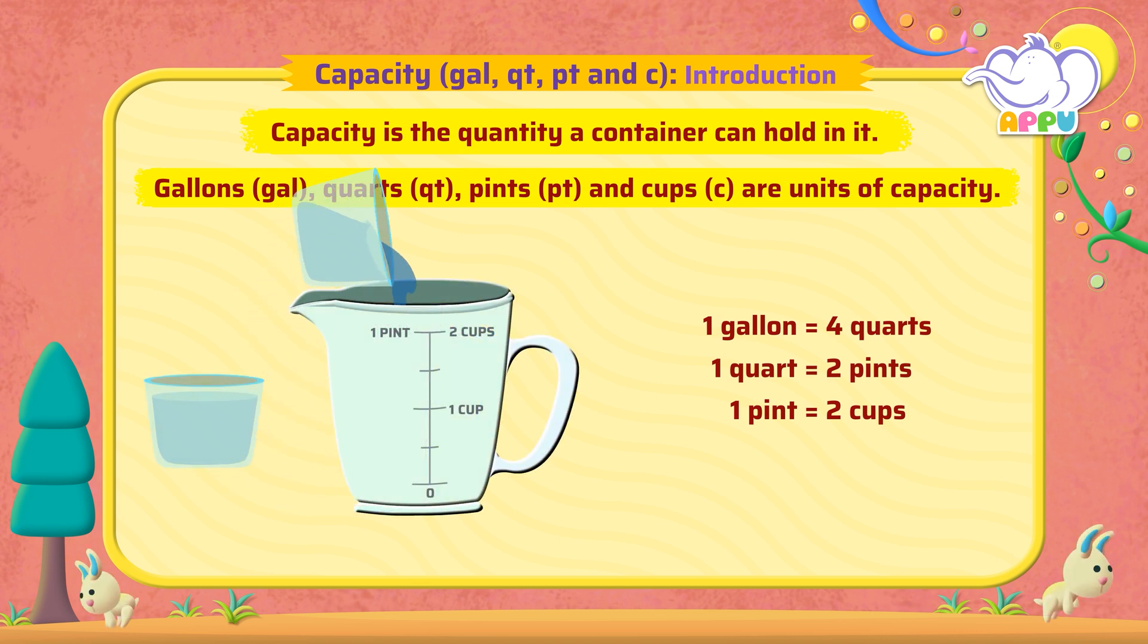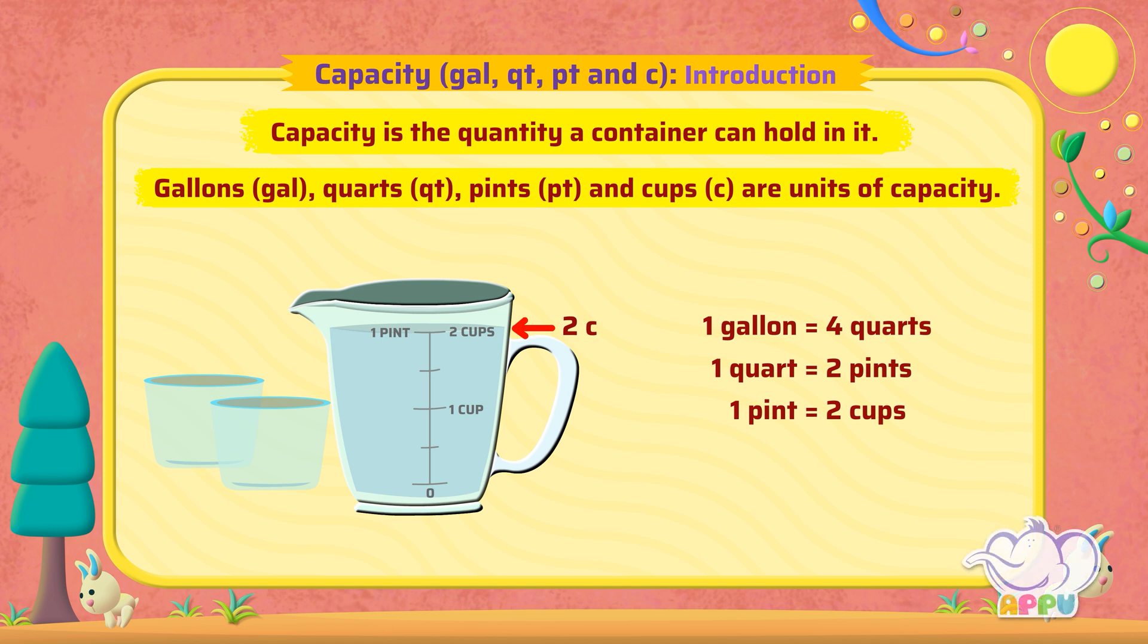Let's pour two cups of water into this measuring cup. The level of water is at a number written on the marking. In this case it is two cups.